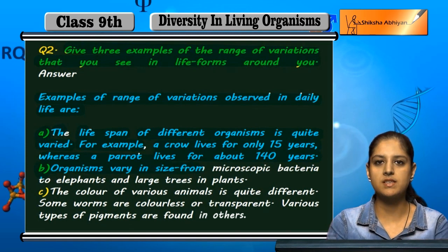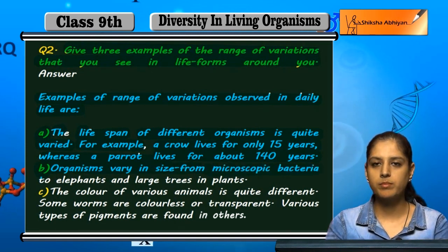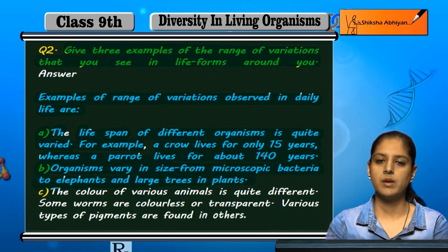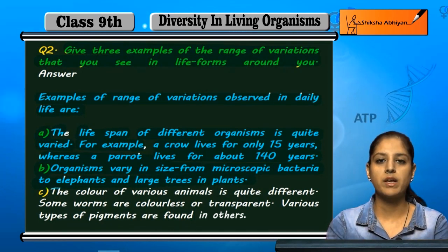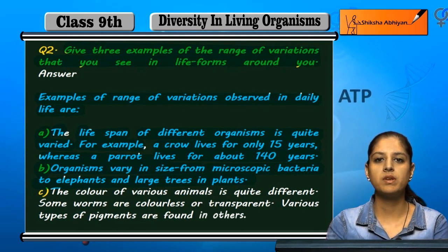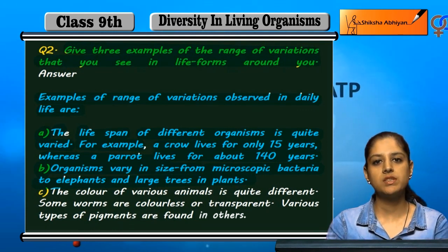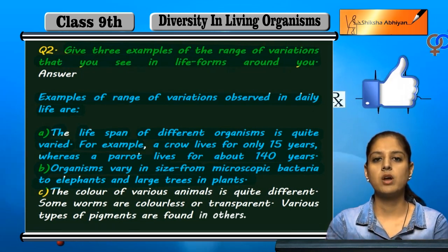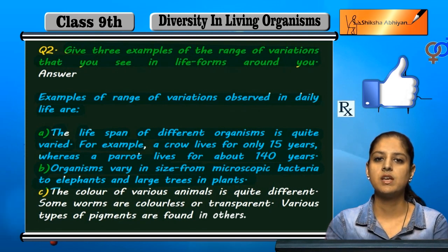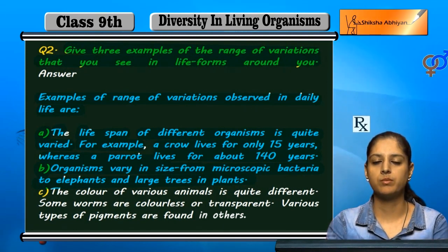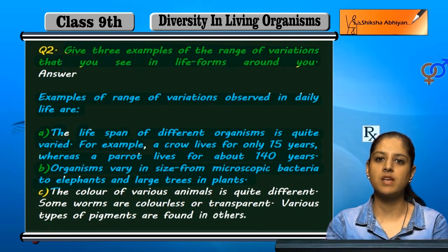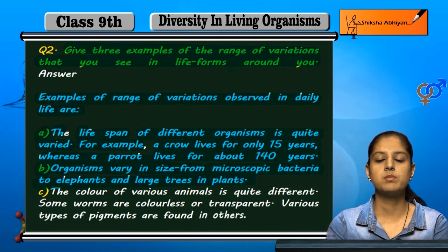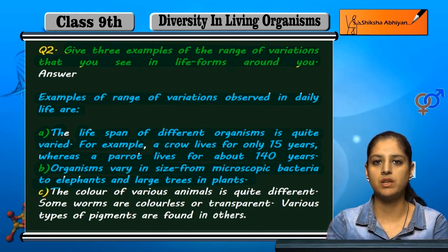Second example: organisms vary in size, from microscopic bacteria to elephants and large trees in plants. Size is also a variation. There are microorganisms that we can't see with our naked eye, and on the other hand you have elephants, giraffes, and huge trees. So you can see the variation in size — some organisms are so small that we can't see them, and some organisms are so large.